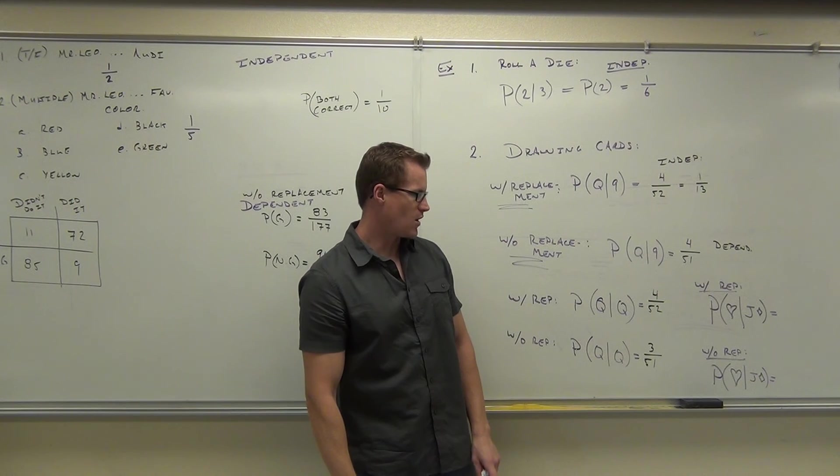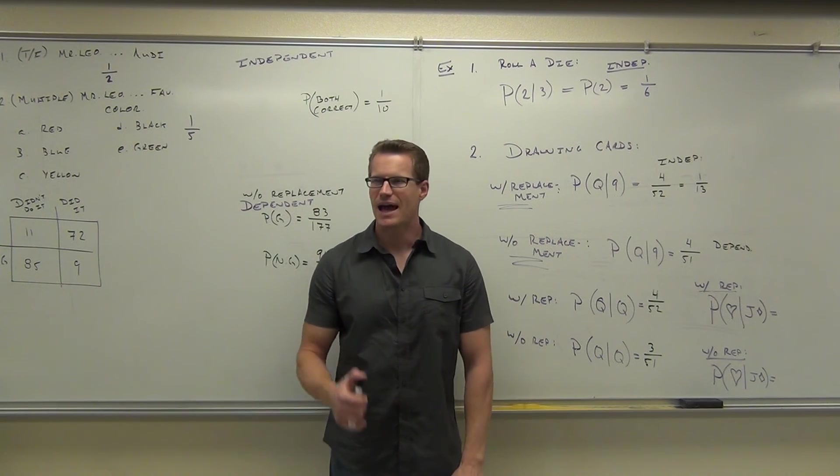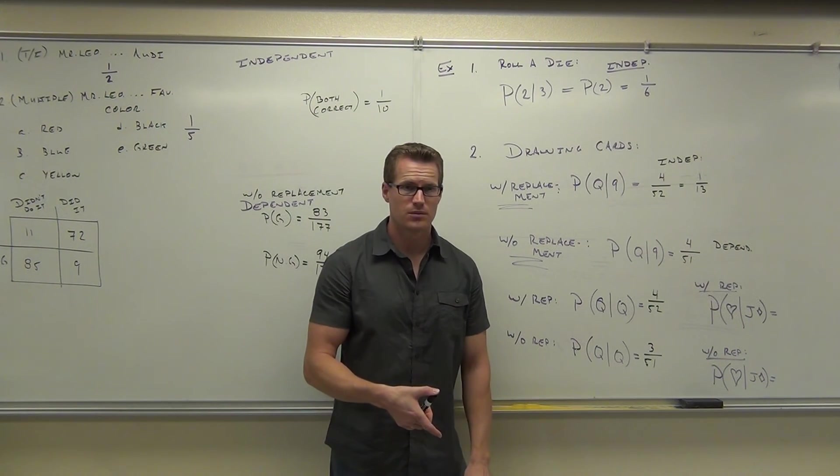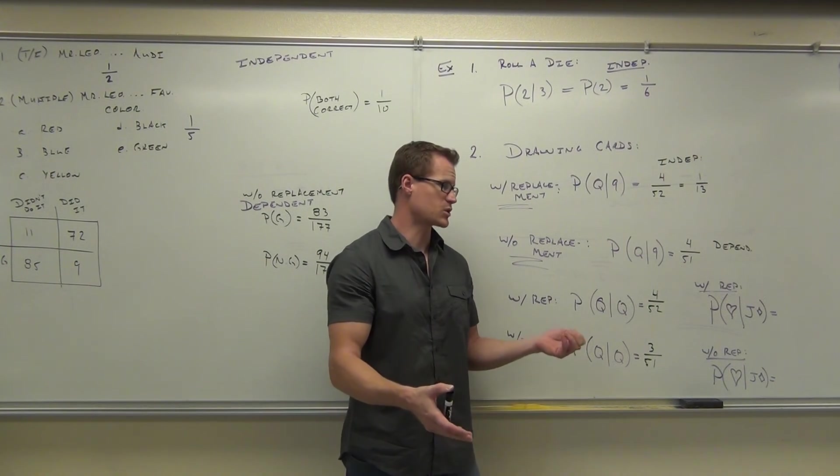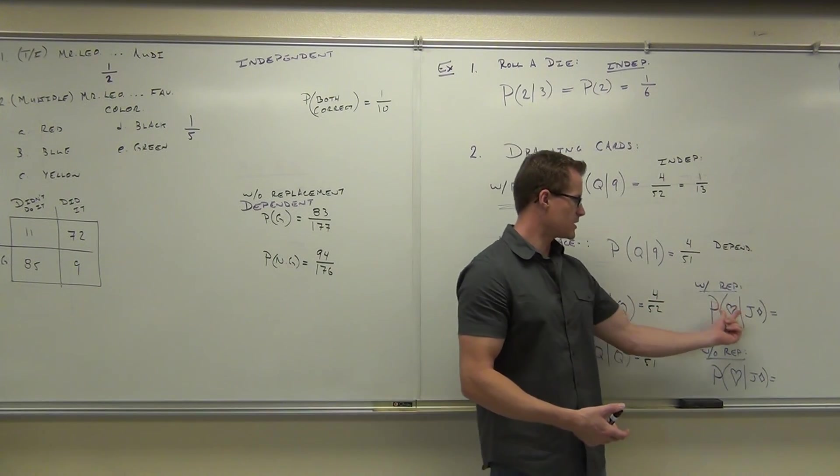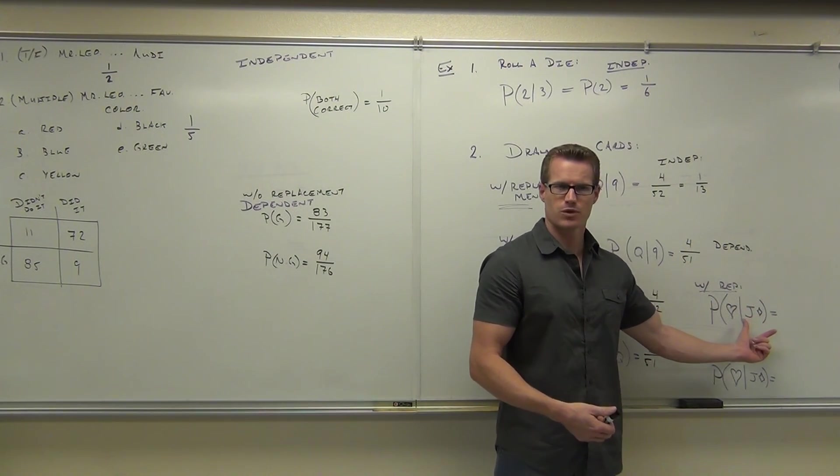How about the probability of selecting a heart given you selected a jack of diamonds? I can't ask you what's the probability of selecting a heart given you selected a jack because a jack, you don't know. Was it a heart? Was it a diamond? Was it a club? Was it a spade? So I had to tell you a specific suit. So with replacement, what's the probability of selecting a heart given you've already selected a jack of diamonds? With replacement.